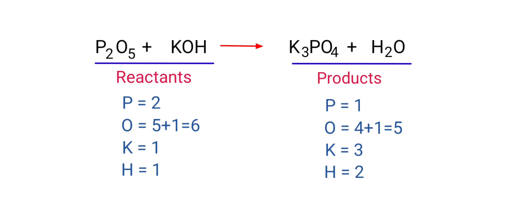In this equation we need to balance the phosphorus atoms first. To do this we need to put a coefficient of 2 in front of K₃PO₄.